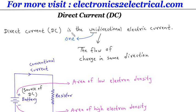Direct current is the unidirectional electric current. Uni meaning is one, and the flow of charge in same direction.